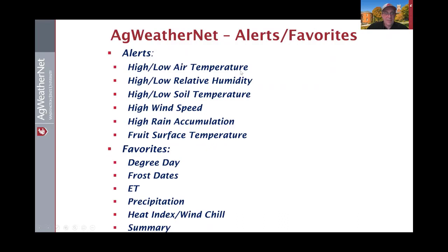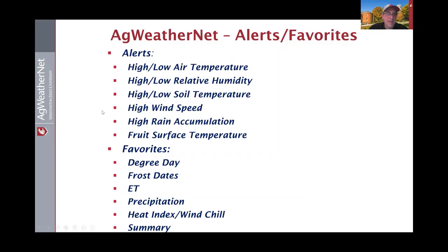Alerts can be set up and delivered directly to your email or text message, including air temperature, humidity, soil temperature, wind speed, rain, and the fruit surface temperature model. Almost all of the variables we collect allow you to set a high or low threshold and be alerted when conditions surpass that threshold.